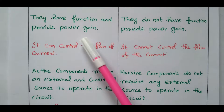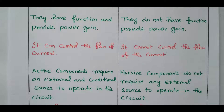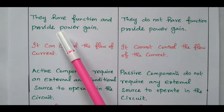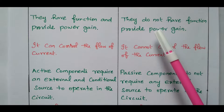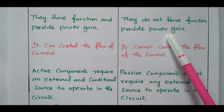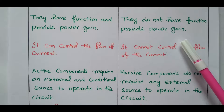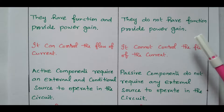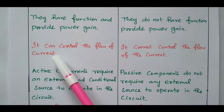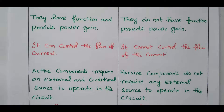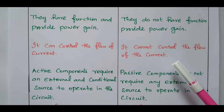Active components have the function of providing power gain — for example, a transistor is a power amplifier, so amplification is possible and power gain is possible. But passive components do not provide any power gain; power gain is not possible in a passive component. Passive components just absorb energy and can control the flow of current. But passive components cannot control the flow of current in an amplified sense — they only absorb or store energy.